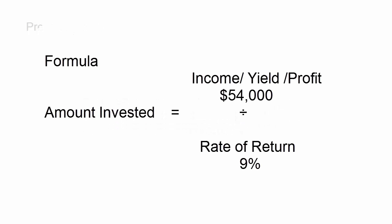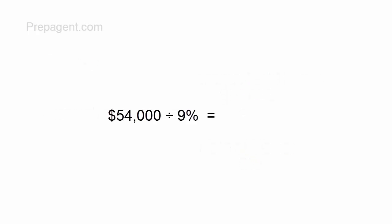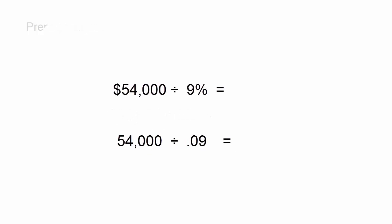Going back to the formula, the annual income is $54,000 and we'll divide that by the rate of return of 9%. So $54,000 divided by 9%, on the calculator it's 0.09. $54,000 divided by 0.09 equals $600,000. So $600,000 is the amount invested.